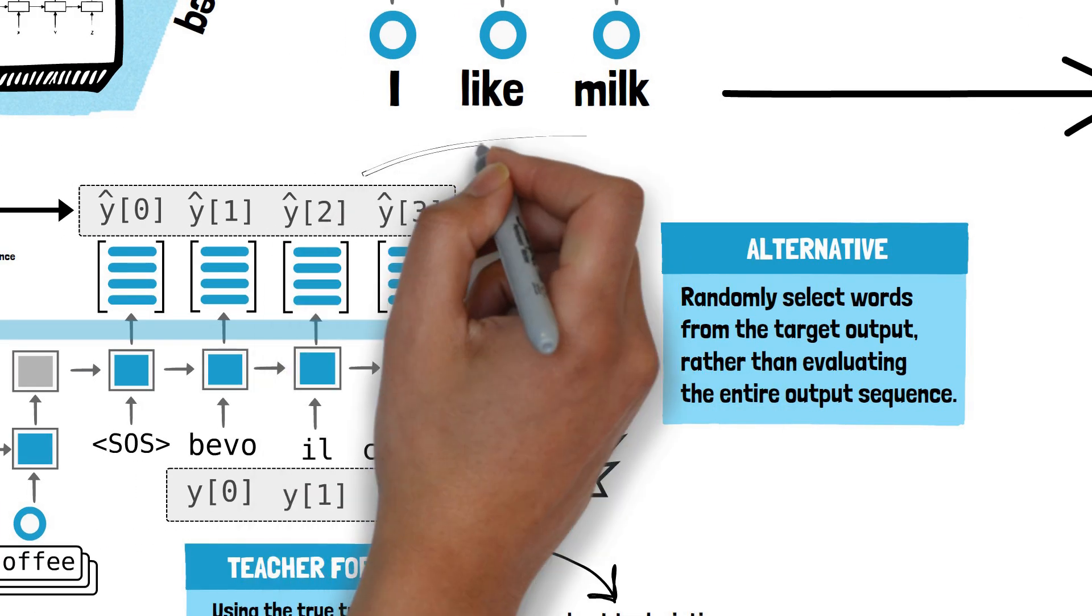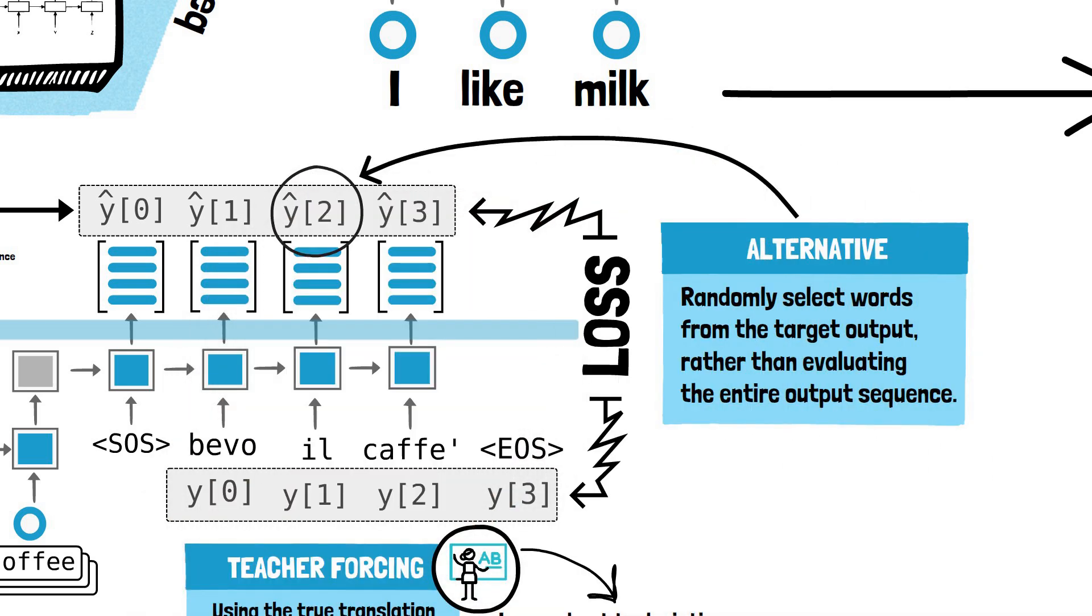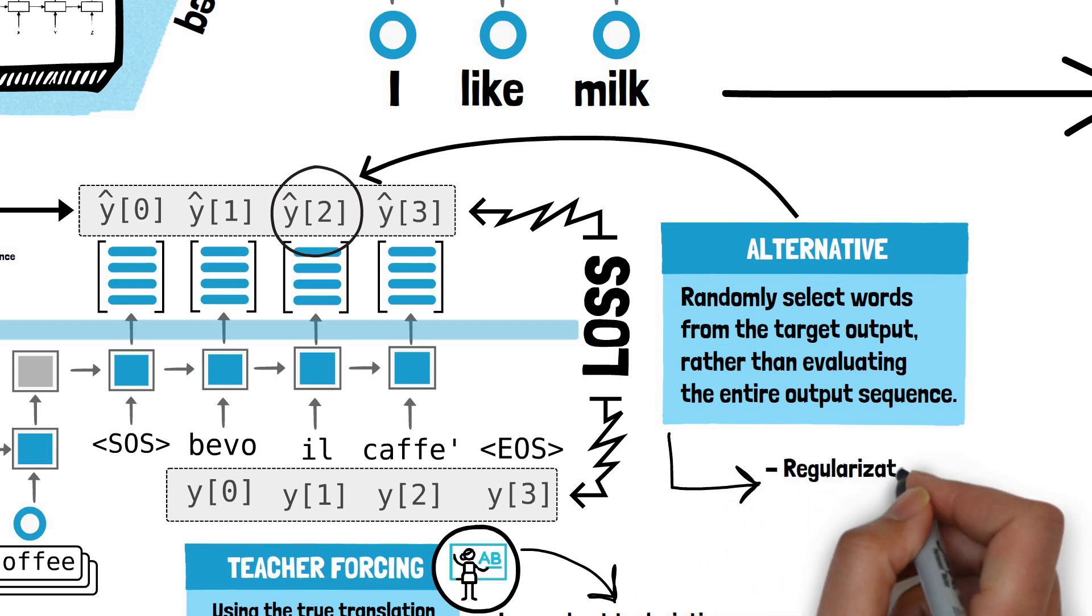An alternative strategy to compute the loss is to randomly select words from the target output, rather than evaluating the entire output sequence. Typically, this method involves selecting just one word at random for loss computation. This approach acts as a form of regularization, potentially preventing the model from overfitting to the training data. By focusing on random individual words, the model is encouraged to generalize better.